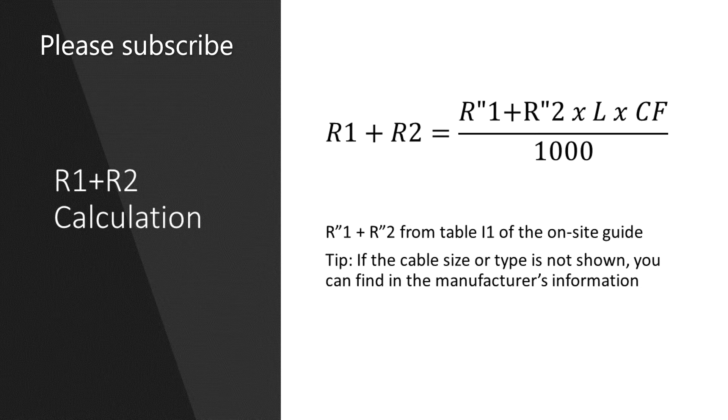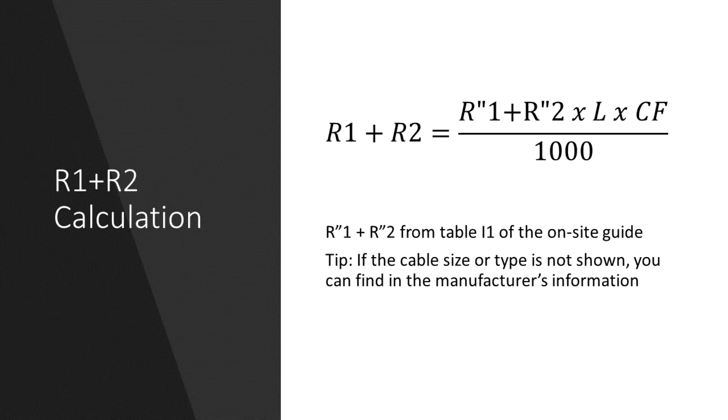So this is the formula for R1 plus R2. We take the tabulated values for R1 plus R2 in milli-ohms per meter from table I1 of the on-site guide, multiply by the length of the circuit and then multiply by a correction factor and then divide by 1000.